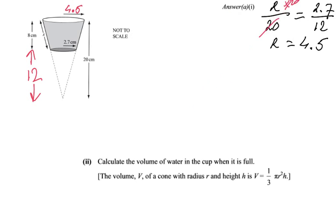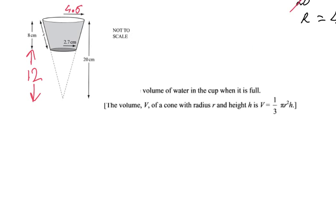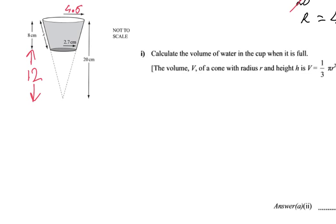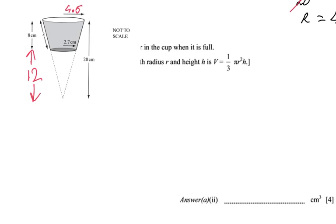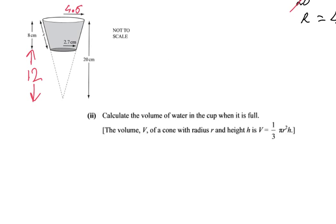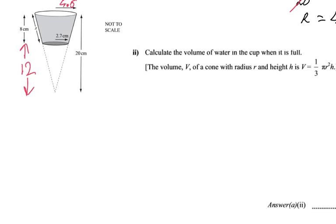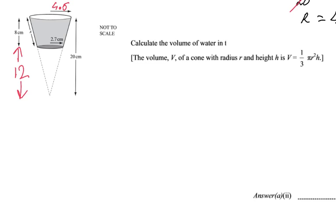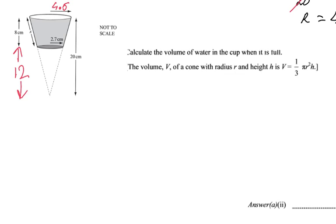That was part (a). Now part (b), which is for four points. You probably have to do quite some work for it. Let's have a look. They say calculate the volume of the water in the cup when it's full. The volume V of a cone with radius r and height h, they give you this formula, which you don't have to remember, is one-third π r squared h.